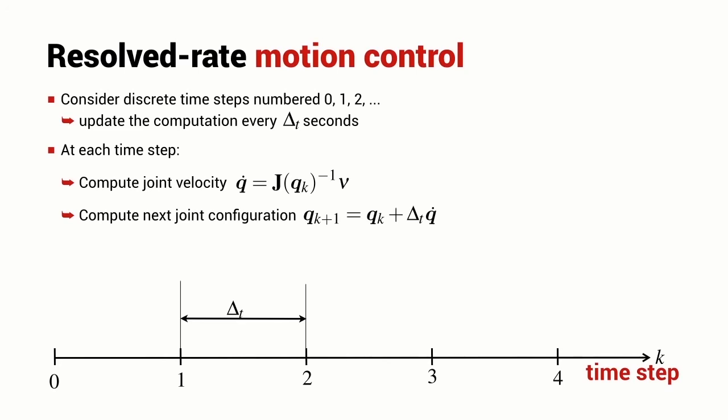I add that to the current value of the joint angles QK, and that gives me the robot's target—where I want the robot joint angles to be at time K plus one. Then I tell the robot hardware to move the joints to this new joint angle configuration over the time interval delta t, and I repeat these steps for as long as necessary.